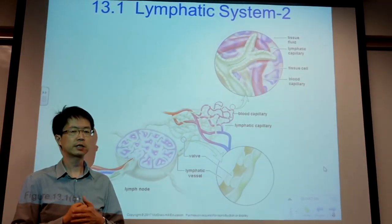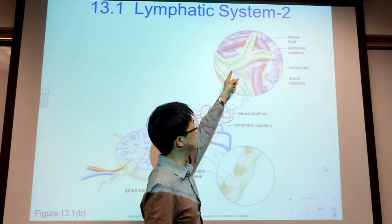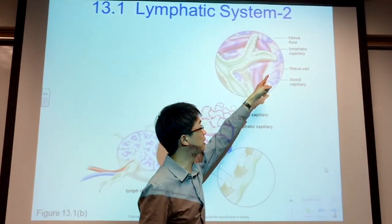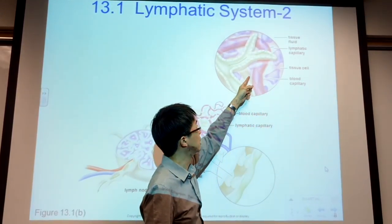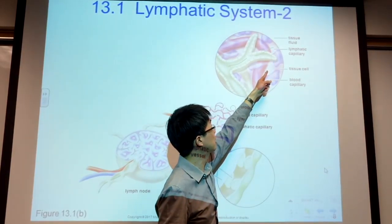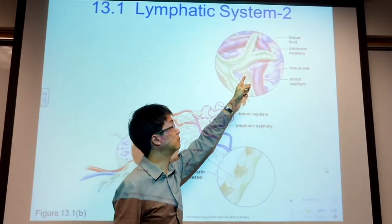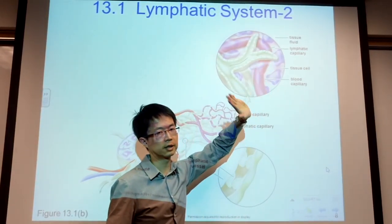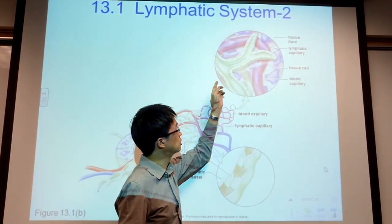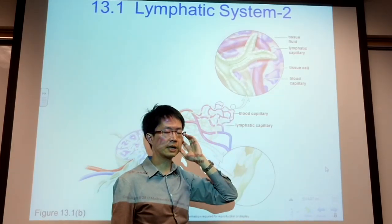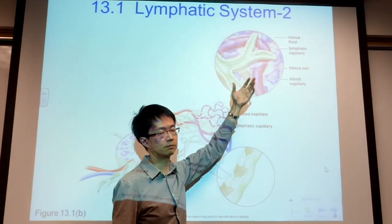This is the graphical representation of what we just talked about. We can see the end of the lymphatic capillary — it has an open end so body fluid can go into the lymphatic capillary through a physical opening. It acts like the root of an eggplant that can absorb excess body fluid.